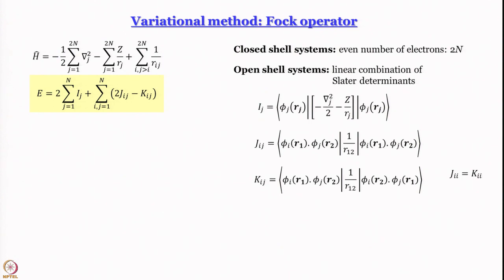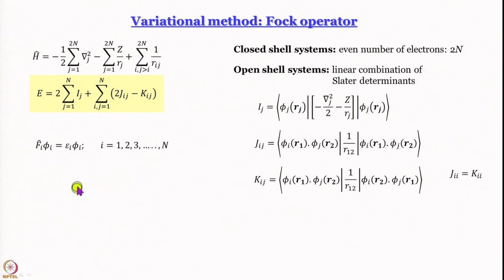But the story does not stop here. We have learned the variational method, so we know that this expression we have got must now be minimized — we have to find the minimum value of the energy from this expression. How do you do that in the variation method? You just minimize it, and when you minimize you end up getting equations involving a Fock operator. The equation is: F_i operating on φᵢ gives εᵢφᵢ — that is the kind of eigenvalue equation we get.